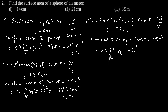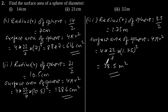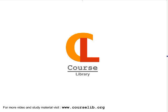This is equal to 38.5 m². So the surface area of a sphere having diameter 3.5 m is 38.5 m².